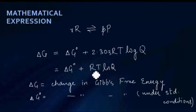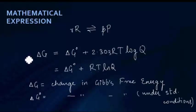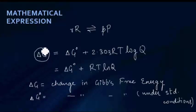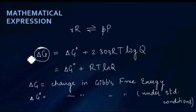You will study delta G in greater detail in the thermodynamics chapter. For now, what you can understand is that delta G represents the maximum amount of useful work which you can obtain from a reversible process — whether physical or chemical. The magnitude of the maximum useful work is calculated in terms of delta G.